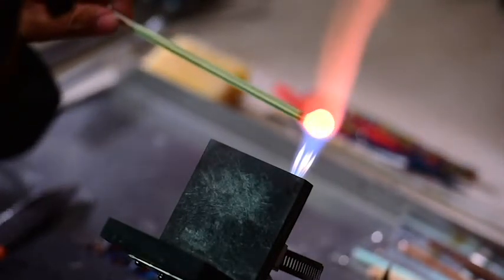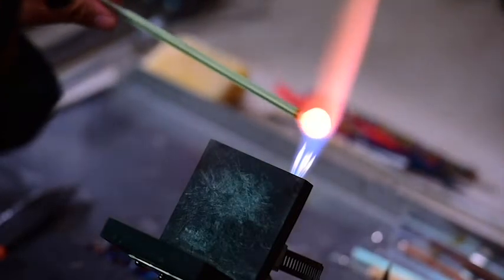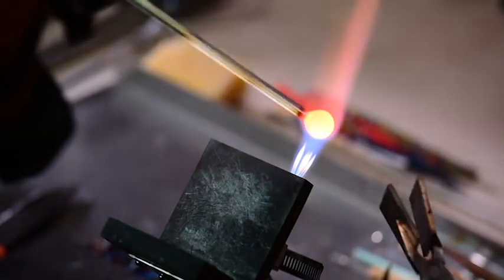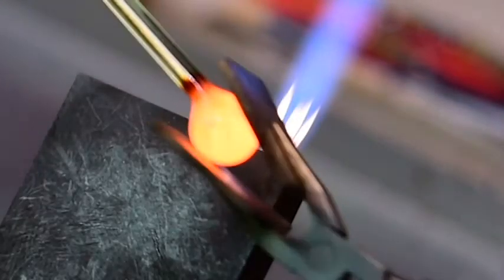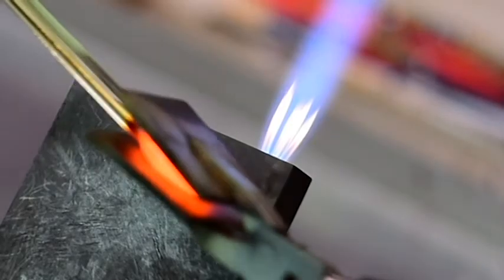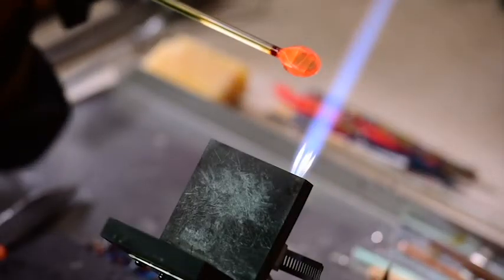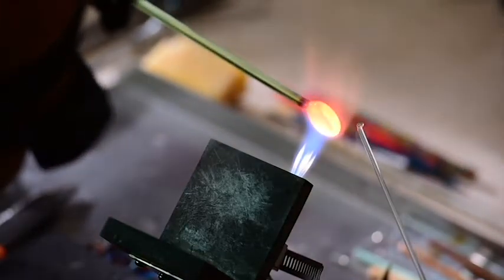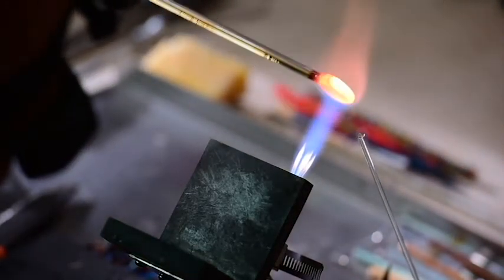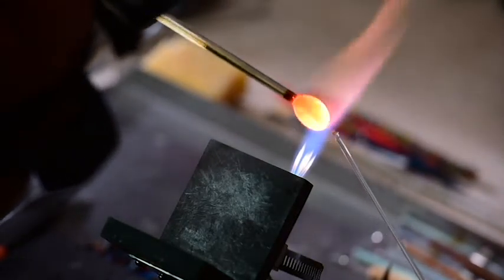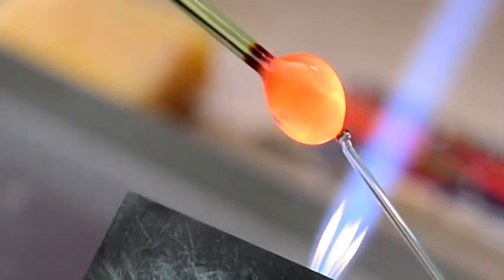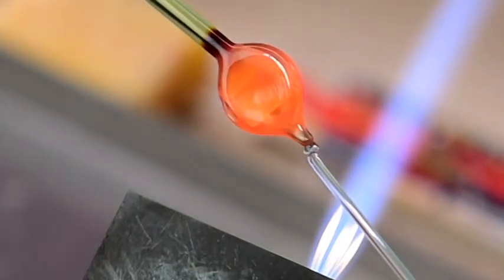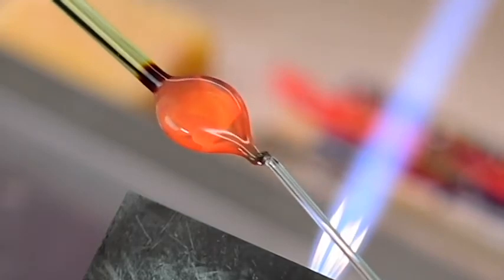I have this gather about as big as I want it. So we're going to mash it down. You want to mash it down pretty flat, but not all the way flat. Otherwise, when we go to put our lines in it, there won't be enough glass to make it look nice. Now I'm heating that flattened gather up, attaching a little punty, and we're going to pull it out. And you can see that leaf shape starting to form.